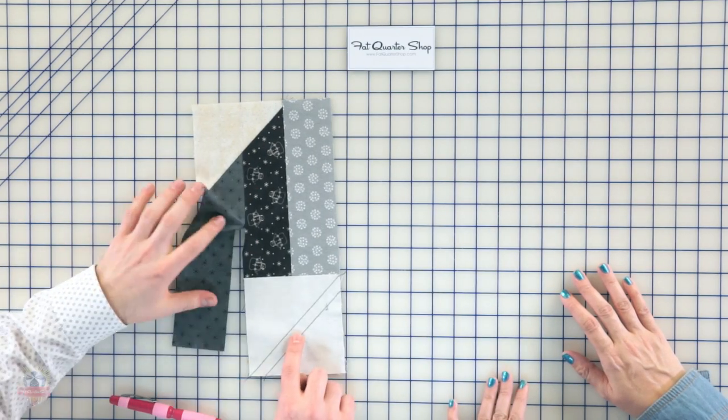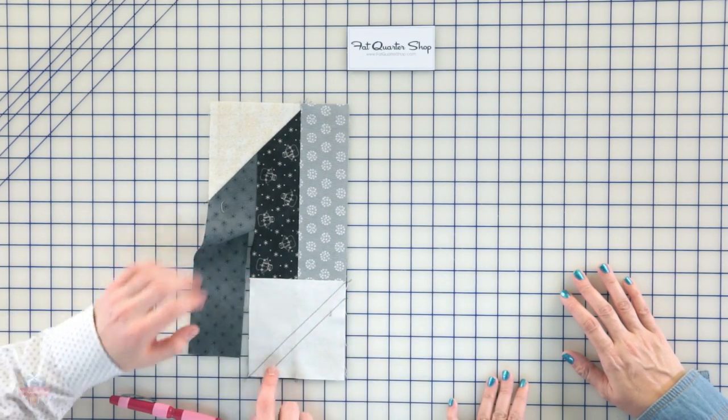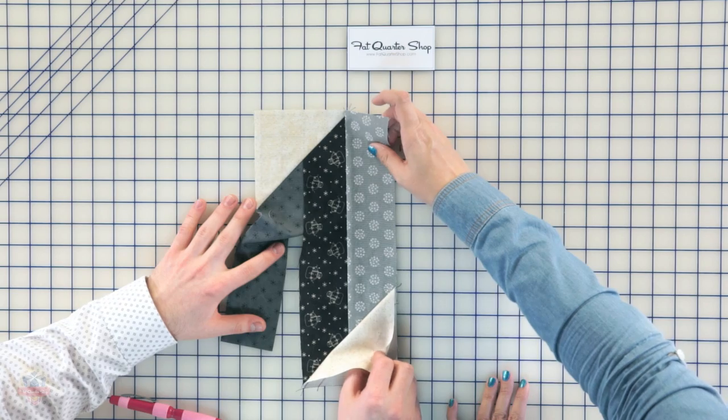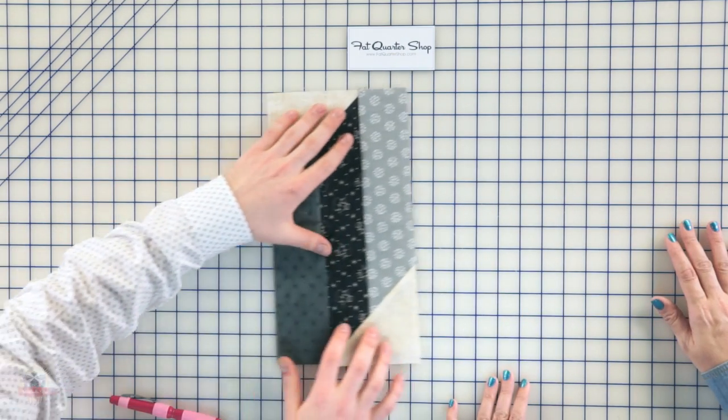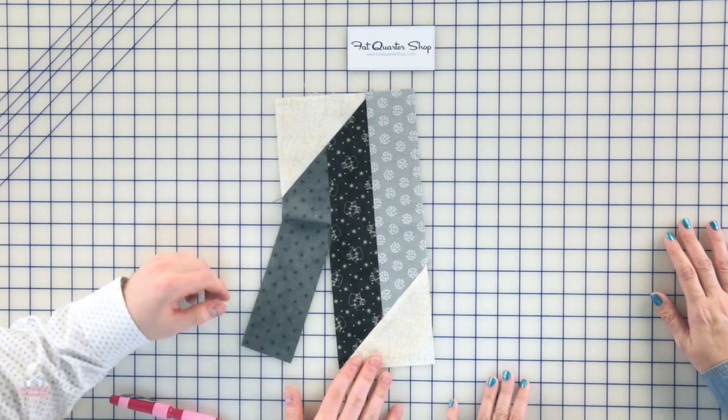So next, we're gonna have it sewn and we're gonna cut right down the middle. You're gonna press to the triangle. Now you're ready to complete your partial seam unit and you have a block almost done.